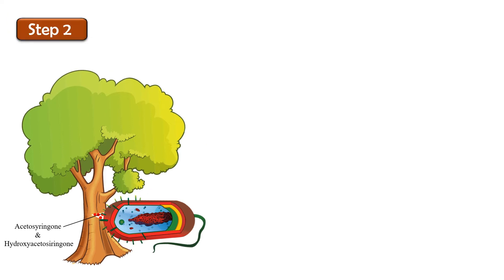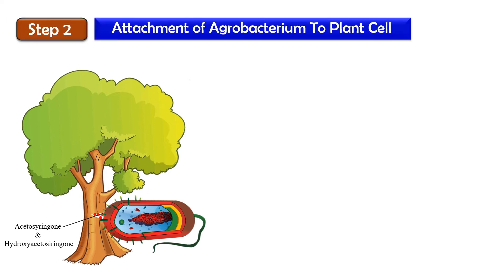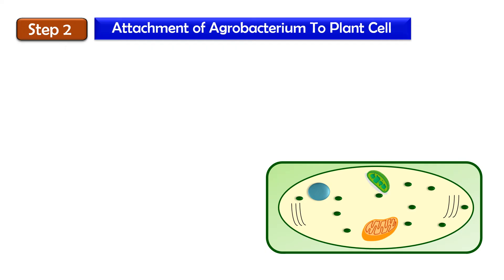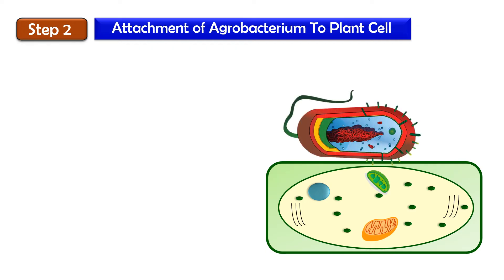The next step is attachment of this Agrobacterium to the plant cell. After recognizing the signal and being attracted toward the plant wound, it will now attach itself to the plant cell. This attachment generally involves chromosomal genes — specifically CHV-A and CHV-B genes — which are involved in the attachment of this Agrobacterium to the plant cell.